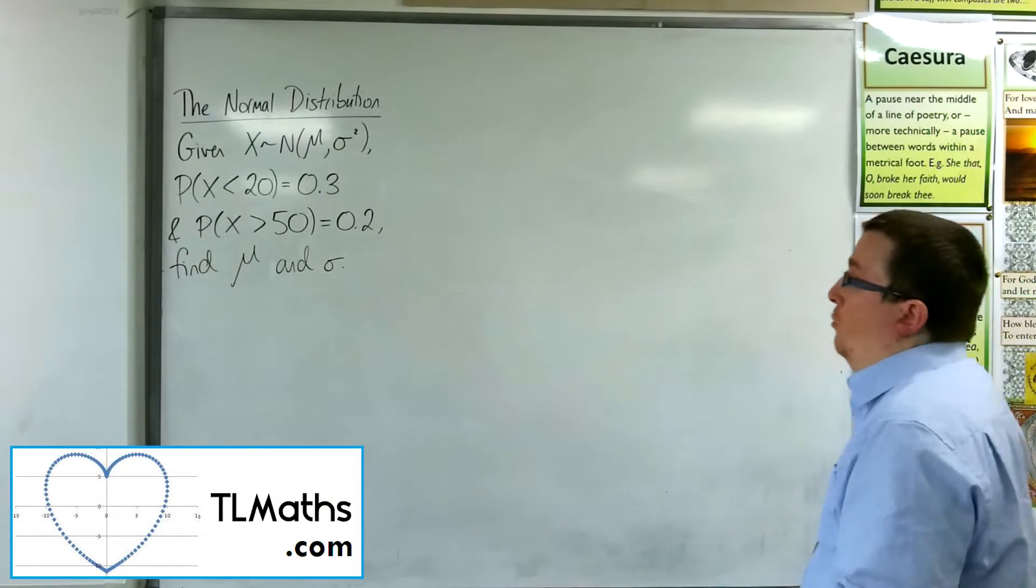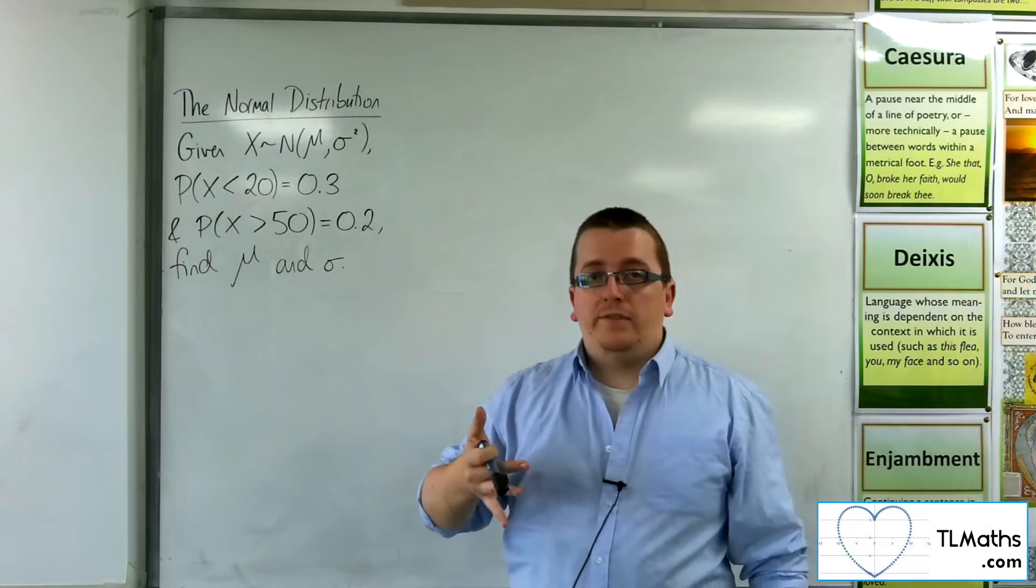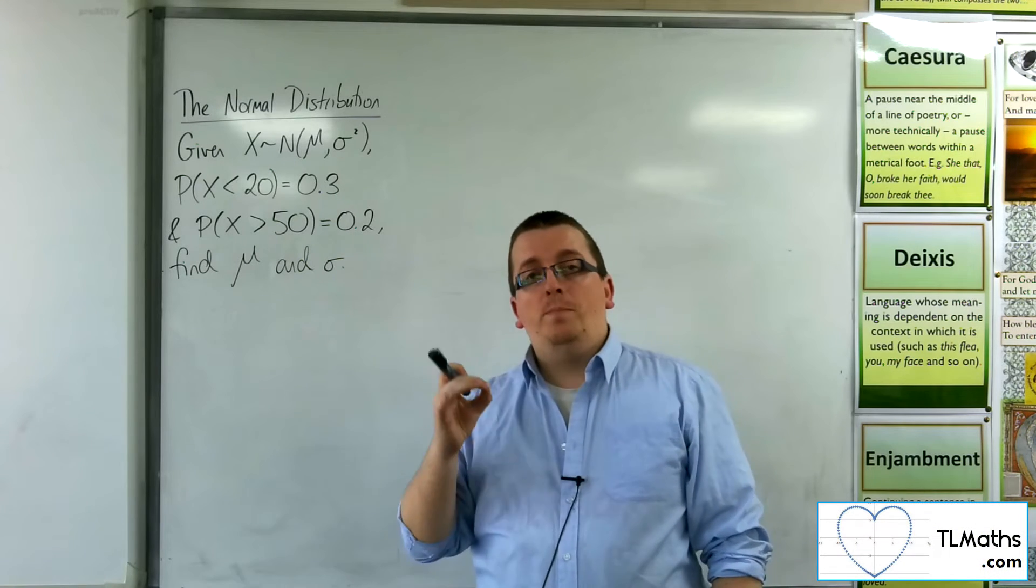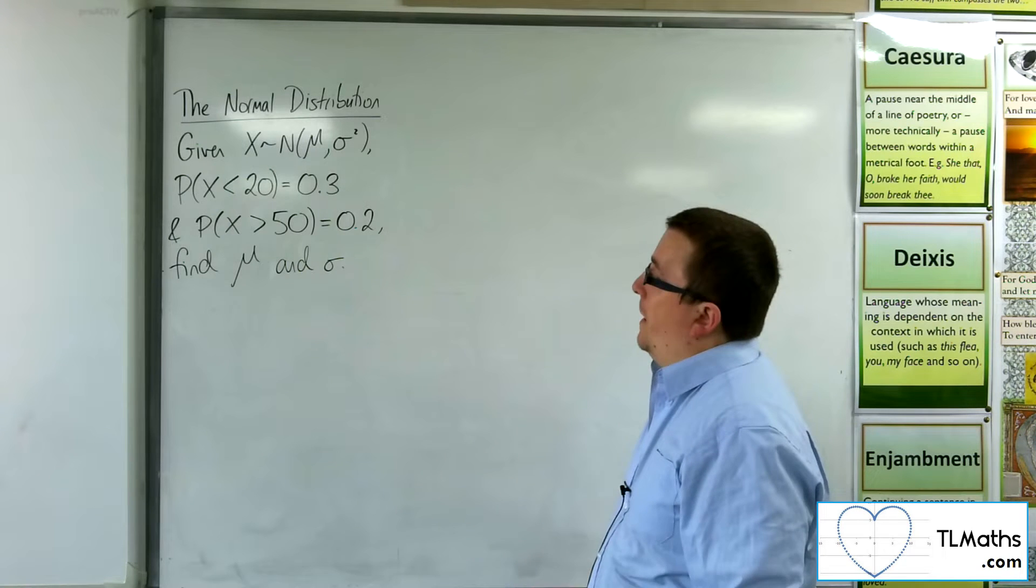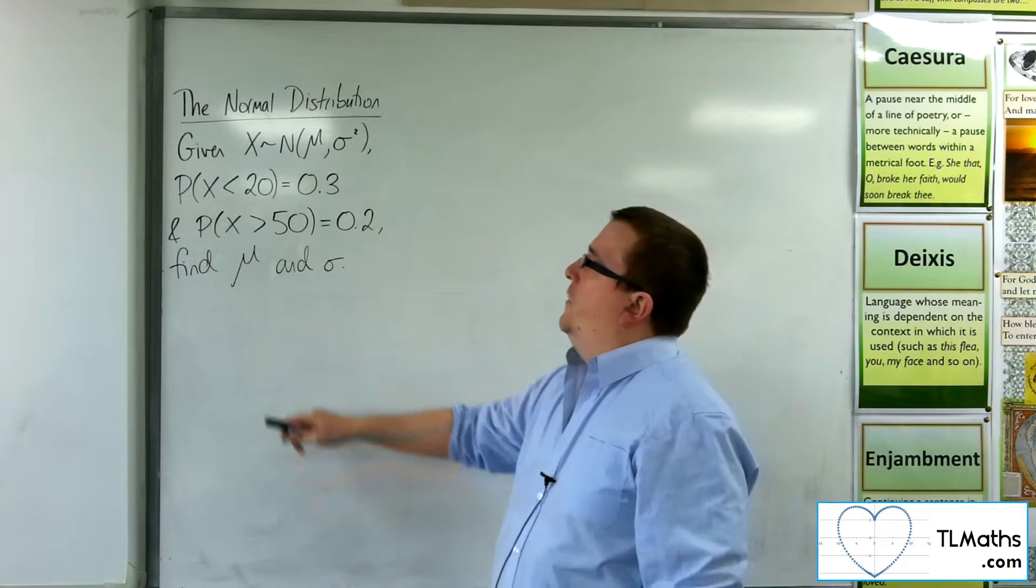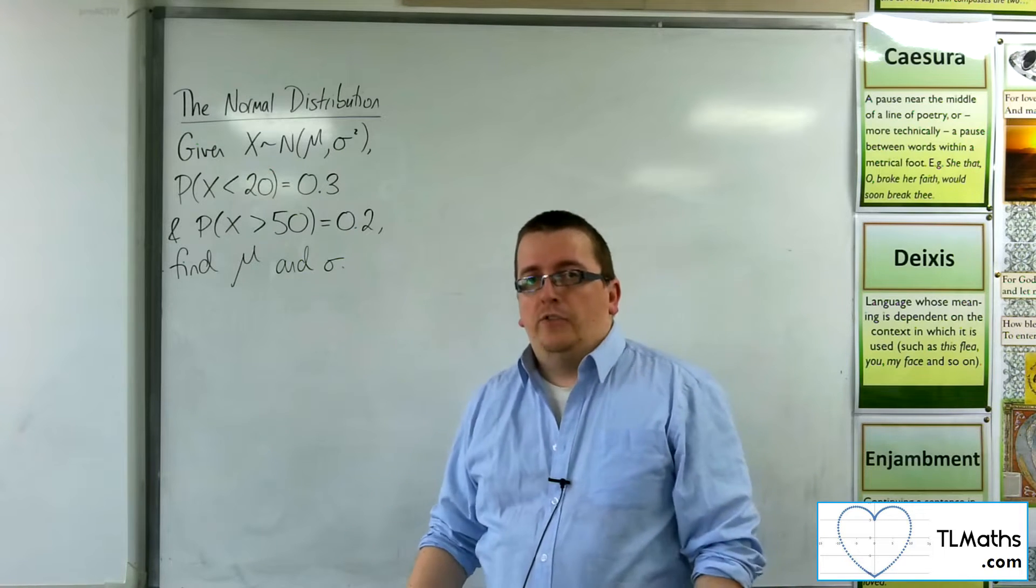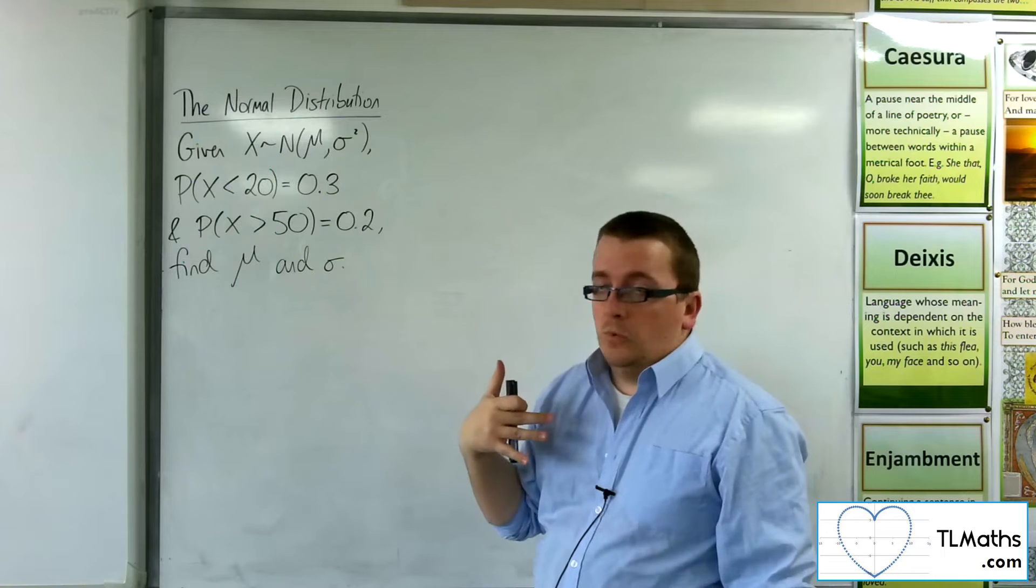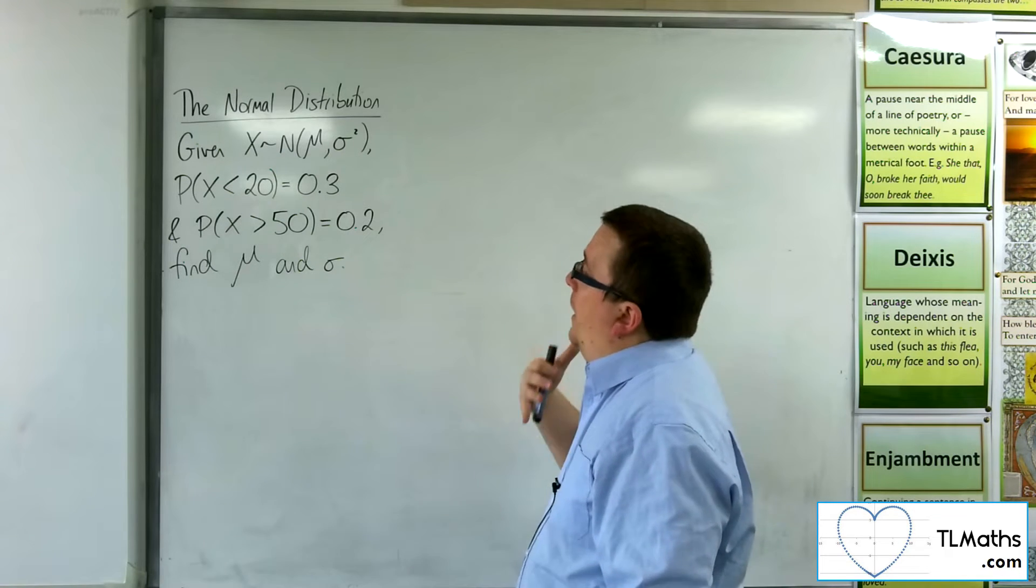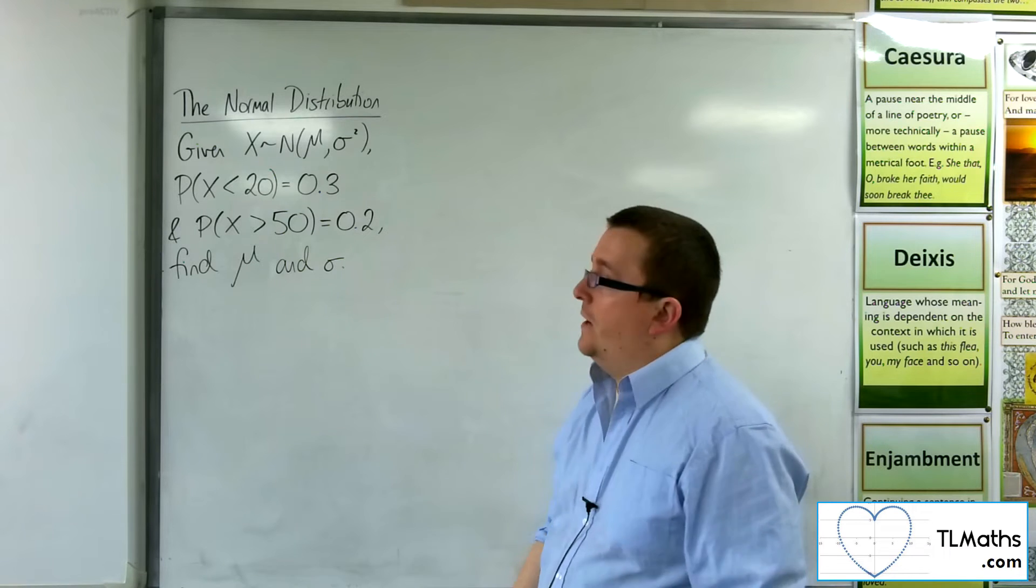Okay, so let's say we've got a normal distribution, but we don't know the mean and the standard deviation. But we're given two bits of information from which, hopefully, we can figure them out. So we're told that the probability of X being less than 20 is 0.3. So there's a 30% chance that X is less than 20, and there is a 20% chance that X is greater than 50.